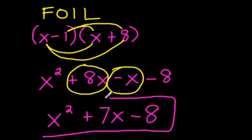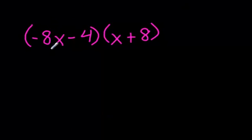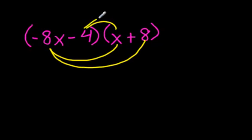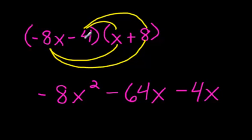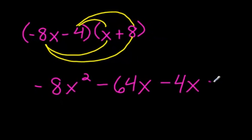So, let's try another question. Remember, first, outside, inside, and then last. Let's try it out. Negative 8X times X. Negative 8X squared. Negative 8X times 8. Well, that would be negative, what's 8 times 8? That's right. 64, and don't forget the X. Negative 4 times X is negative 4X, and then negative 4 times 8 is negative 32.